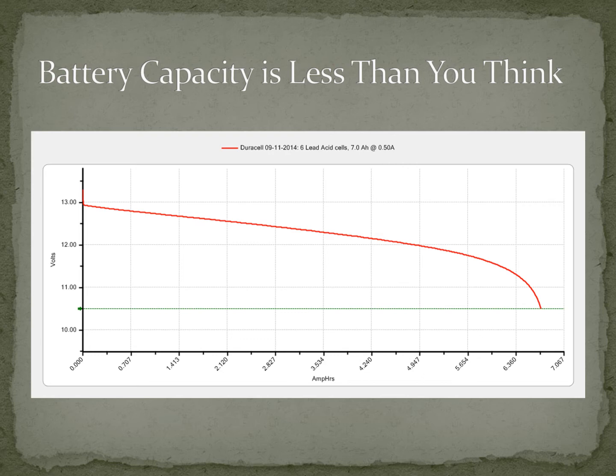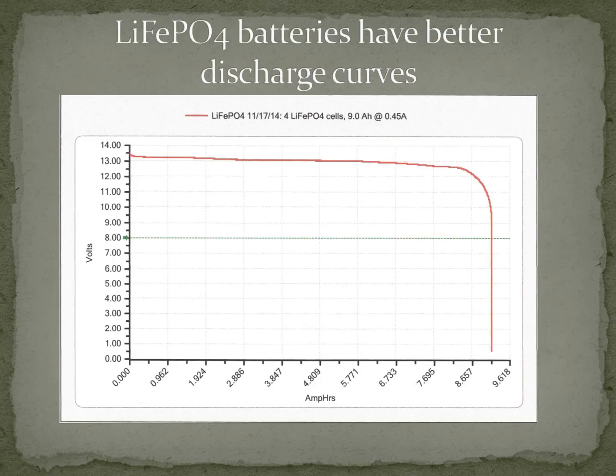I also tested a lithium iron phosphate battery listed at nine amp hours. It has a much flatter discharge curve. I discharged it at 5% of its rate, which is 0.45 amps — just under a half amp — and I was able to get nine and a half amps out of this battery. Notice the really flat discharge curve: once it hit 12 volts, it suddenly dropped off and went down pretty quickly.